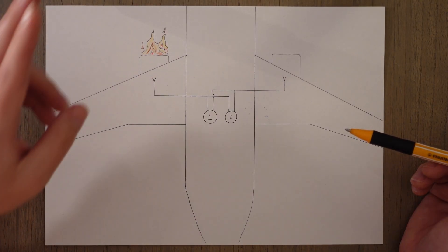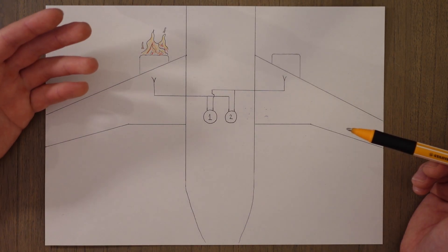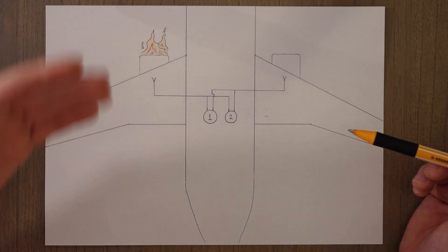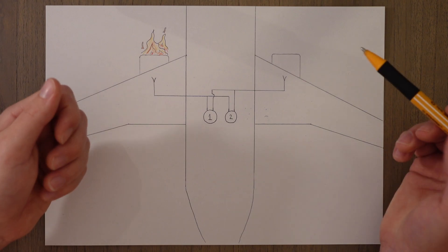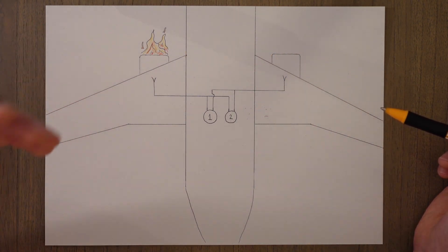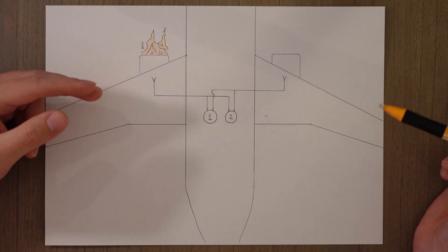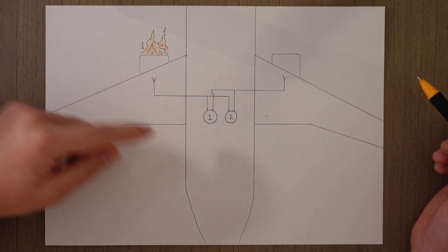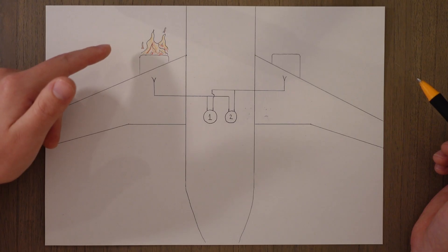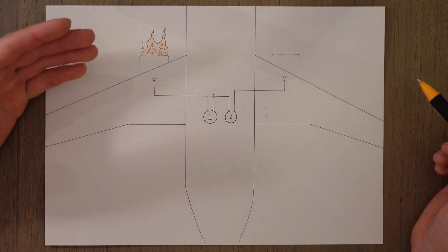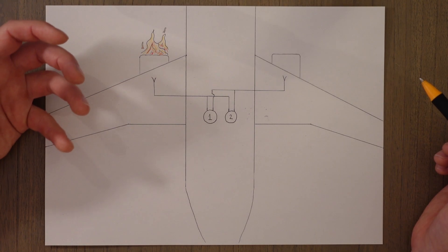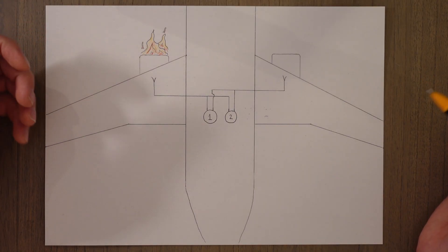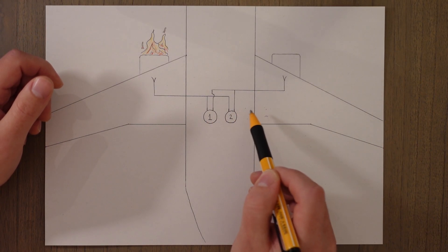In the A320 this is on the overhead panel whereas on a 737 for example it's beside the thrust levers. When the handle is pulled, let's say it's engine number one's handle, the engine first of all becomes isolated. The fuel cutoff valves are closed to stop fuel from flowing to the engine. The hydraulic cutoff valve stops any hydraulic fluid flowing to the engine driven pump and the bleed air source is cut off as well. By pulling the handle we also arm the squibs which are essentially just remote little switches on the fire bottles.